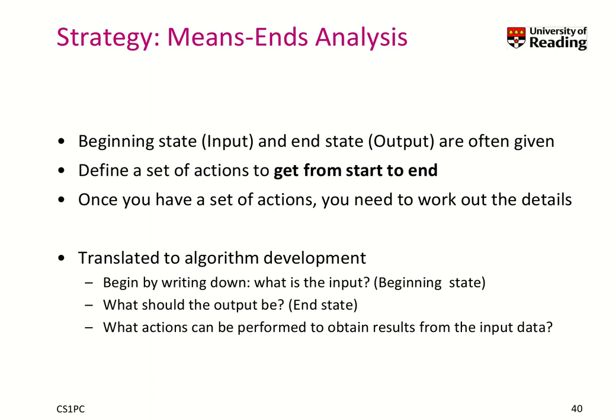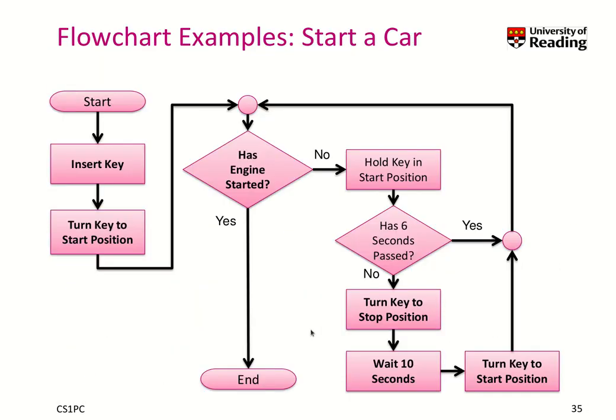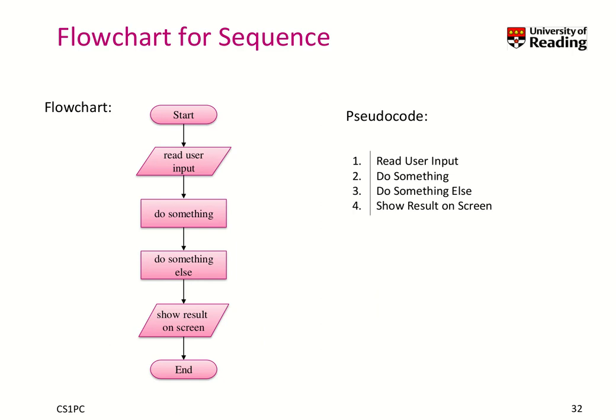Means-end analysis means you have the input and the expected end state — which is the output — given. So now you have to define a set of actions to get from the input to the end. Once you have a coarse-grained set of actions, you need to work out the details. Always write down what the input is, how it is defined, all this data, and how the output looks like, which is the end. Then you look at those actions. When I showed you this little flowchart, you can think of many problems that really look like that — you read some user input, you do something, you do something else, and you show the results on the screen.